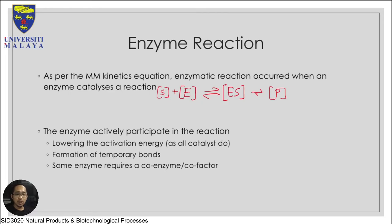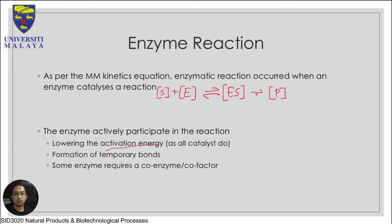When talking about enzyme reaction, it occurs when an enzyme catalyzes a reaction - very basic. The enzyme is actively participating in the reaction by lowering the activation energy, as most catalysts do. It does this either by formation of a temporary bond, or some enzymes use a cofactor and coenzymes to proceed forward. We've looked at one example which is Acetyl-CoA in the last two or three lectures - you can always go back to the references list and the textbook.